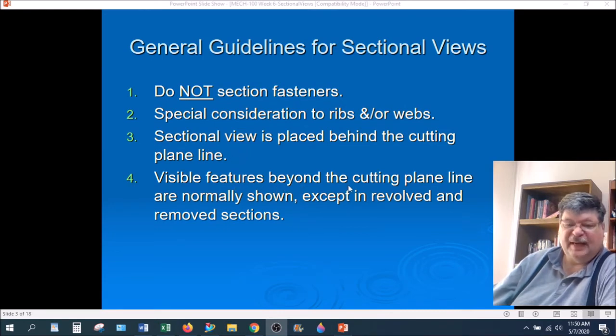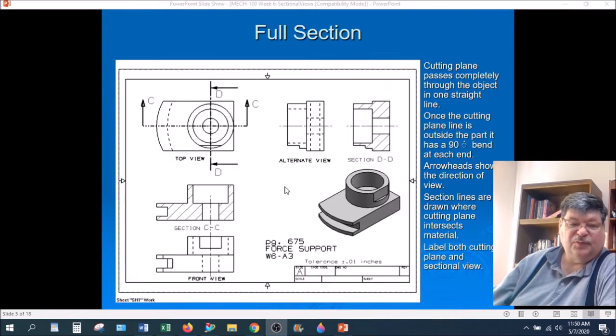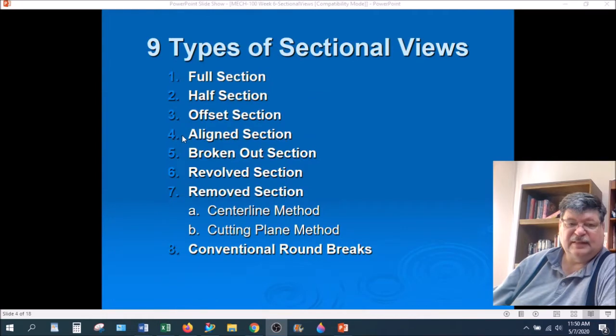Visible features beyond the cutting plane line are normally shown except in revolved and removed sections. So if we had a cylinder sticking up right here, if we had a cylinder right there sticking up, it would be shown in both of these views. Because it's on this side of the cutting plane. If we had something sitting on this plane here, we would see it in the front view, but we would not see it in the section view because it's behind our cutting plane.